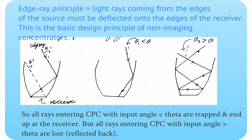The edge ray principle is relatively simple: take a ray coming from the edge of the source — in our case, the Sun — and ensure it ends up at the edge of the receiver. Take one edge ray and send it to one edge, the other edge ray to the other. All rays in between will always end up on the receiver somewhere. Light rays from the edges of the source must be deflected onto the edges of the receiver — this is the basic design principle of non-imaging concentrators.